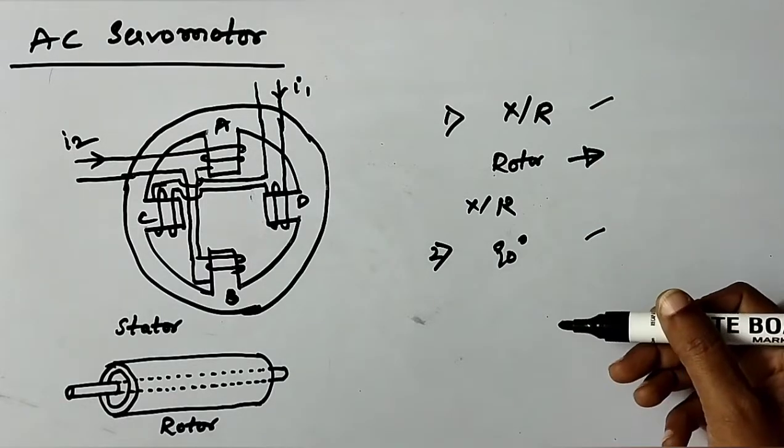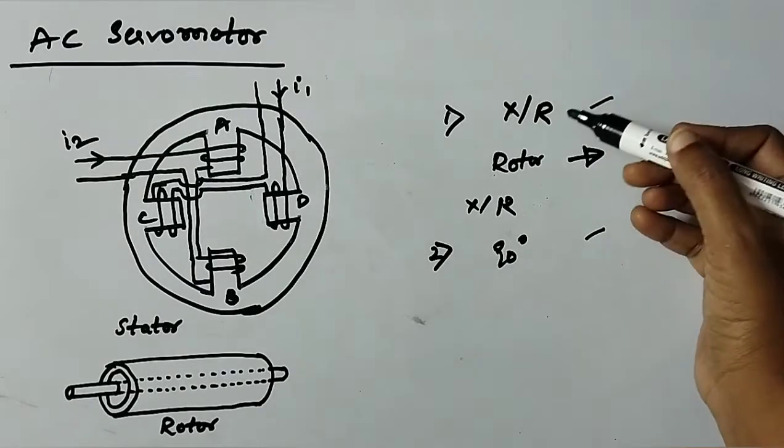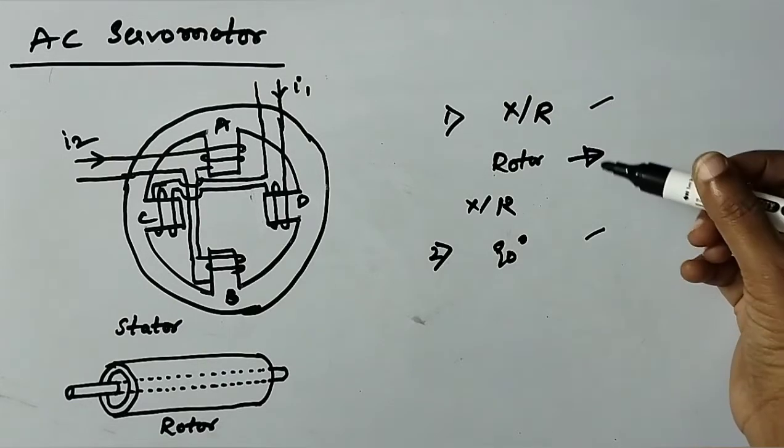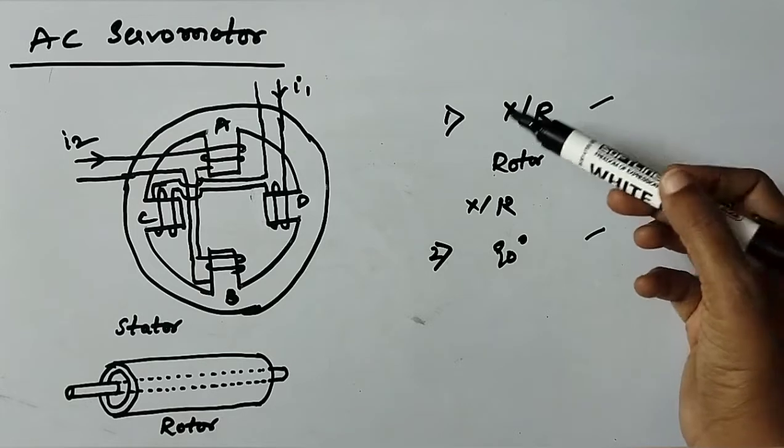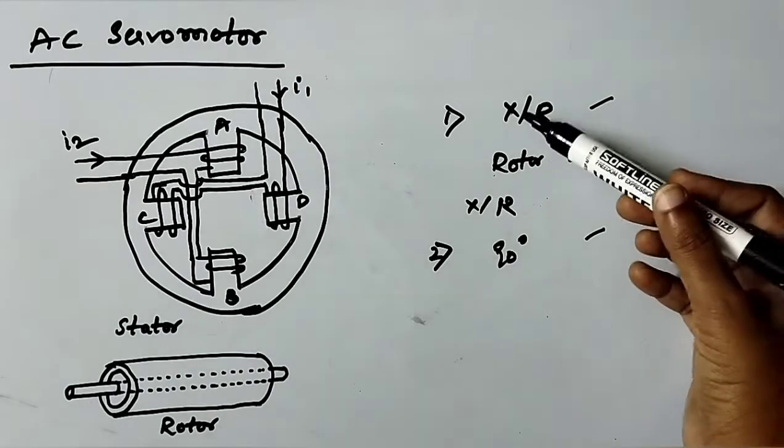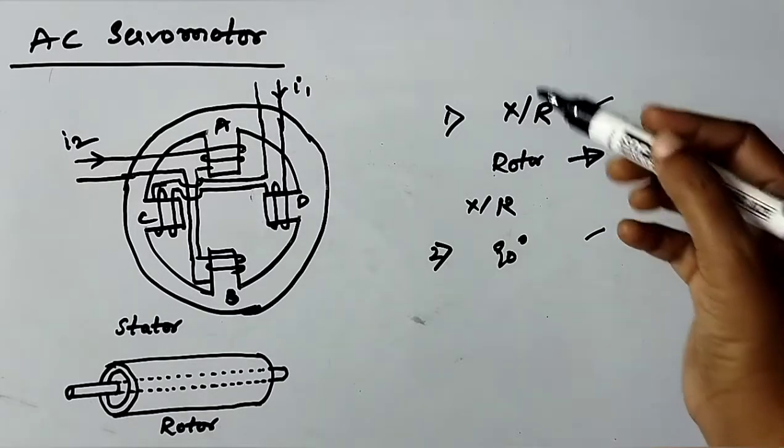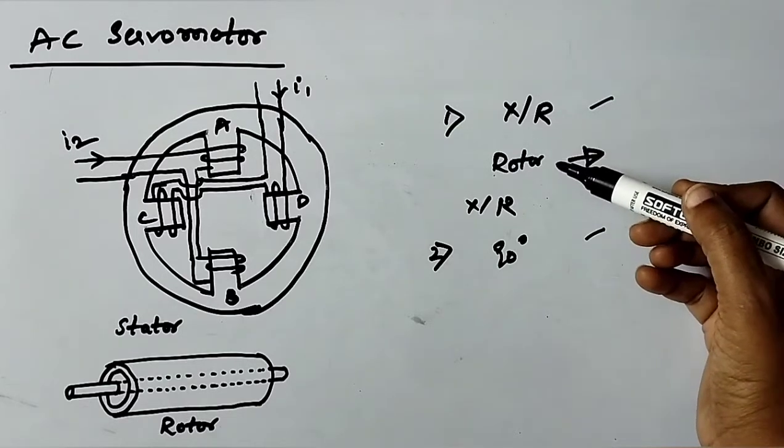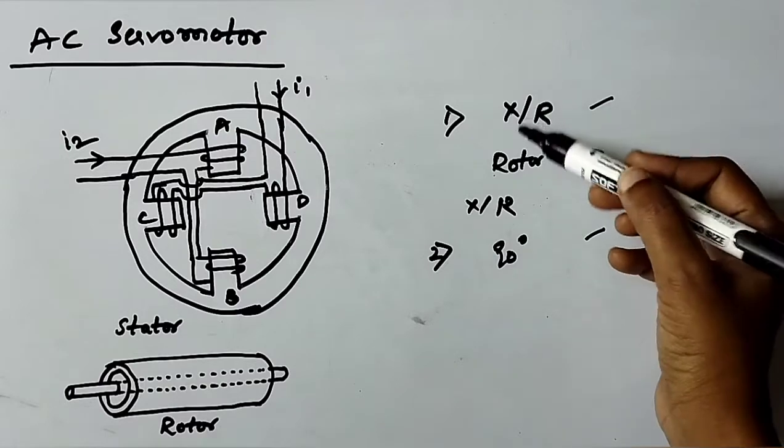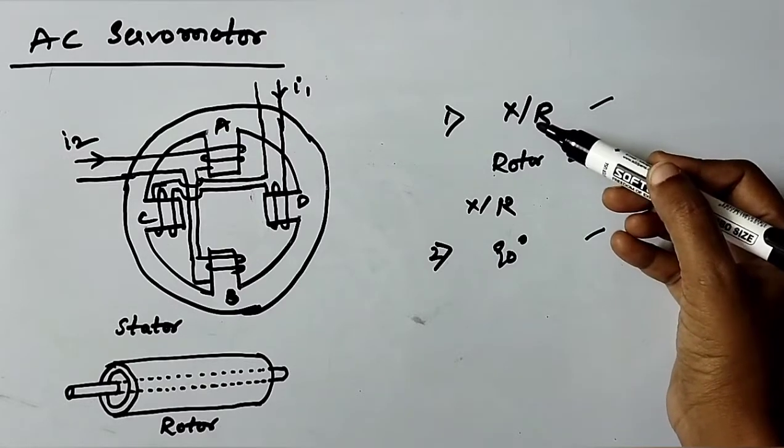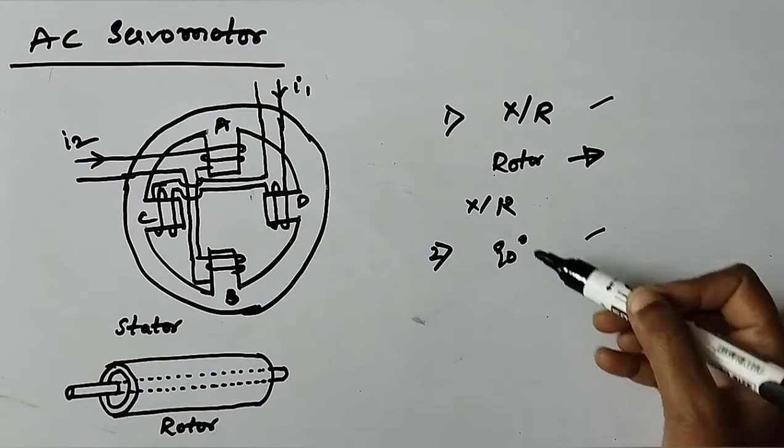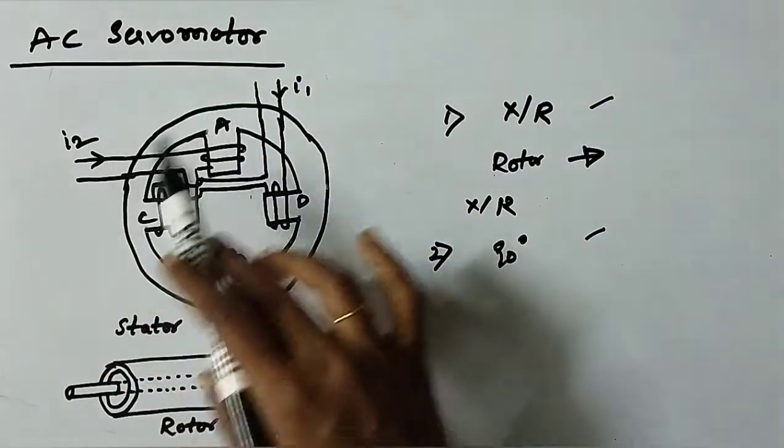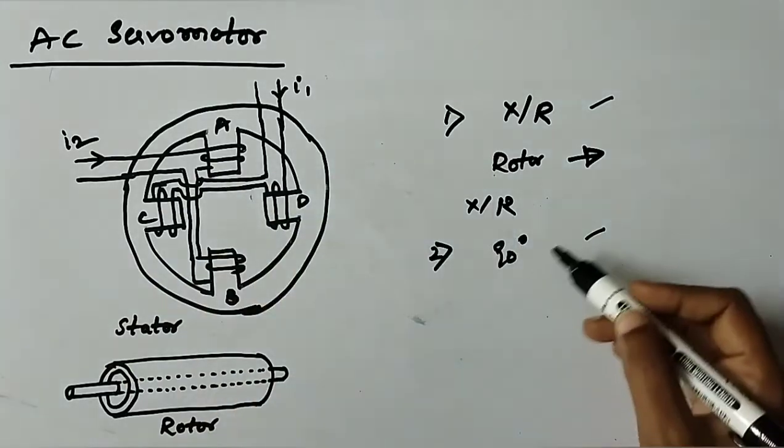These are the two aspects you are supposed to know. The first one is normal conventional induction motors will have high value of X/R, that is inductive reactance to resistance ratio. And when you go for the servo motor, the rotor of the servo motor is built with high resistance so that the X/R ratio would be small.